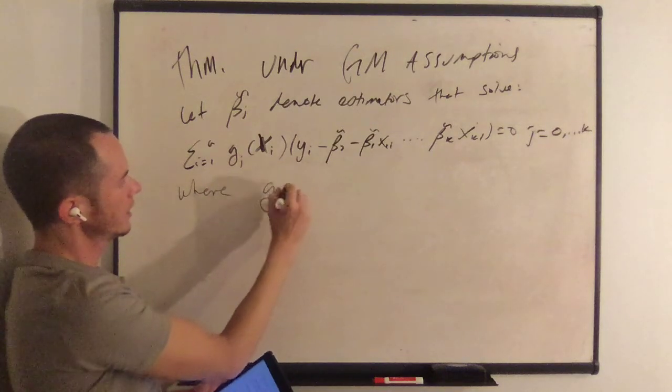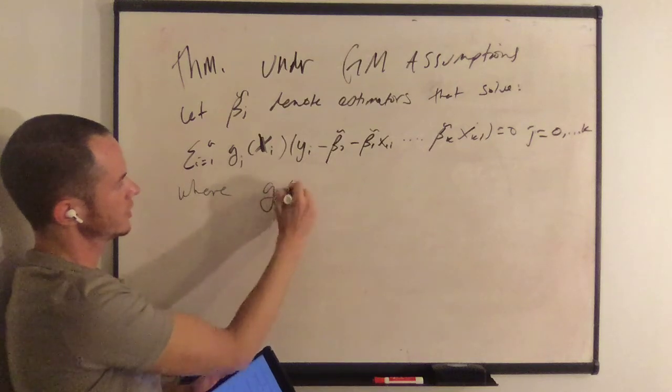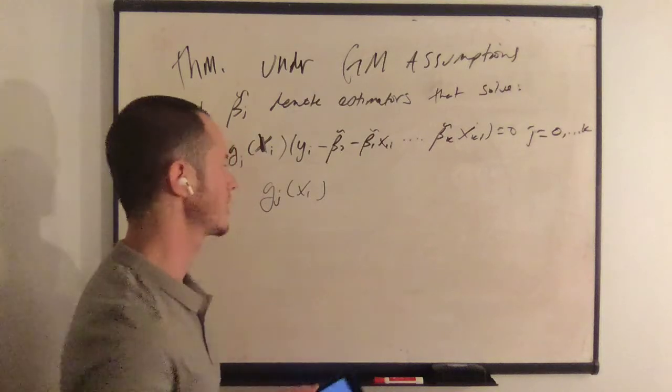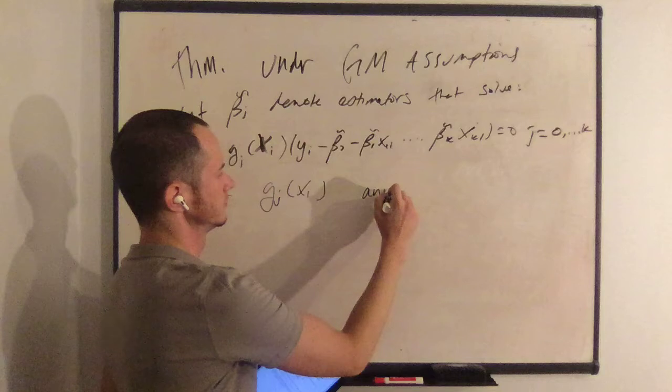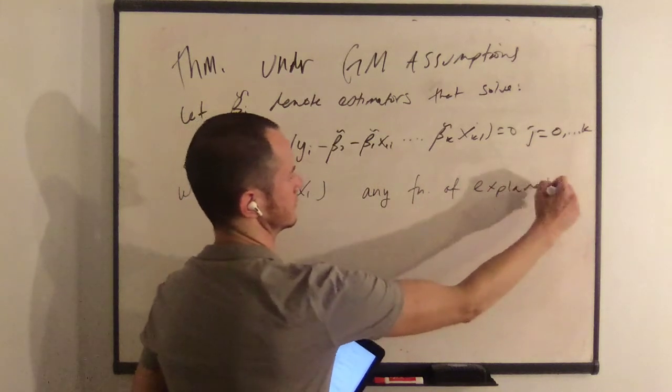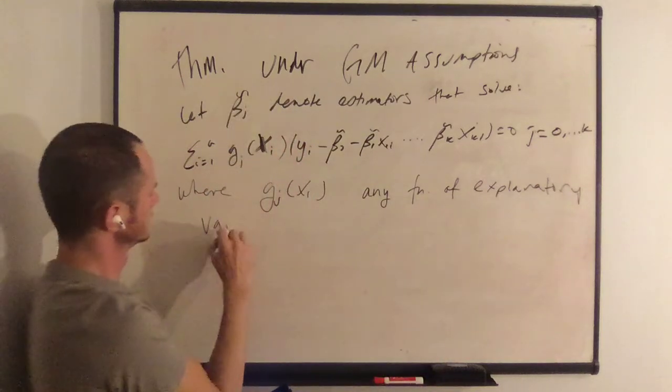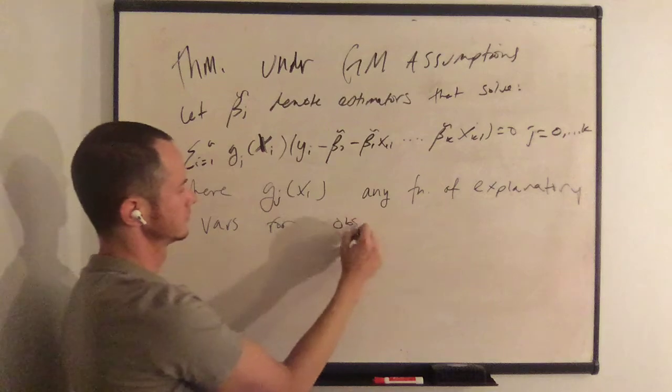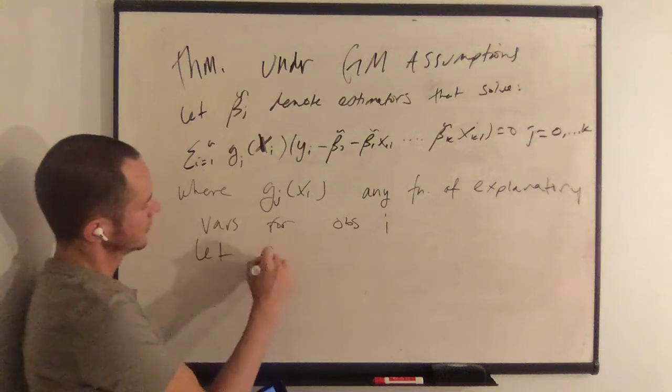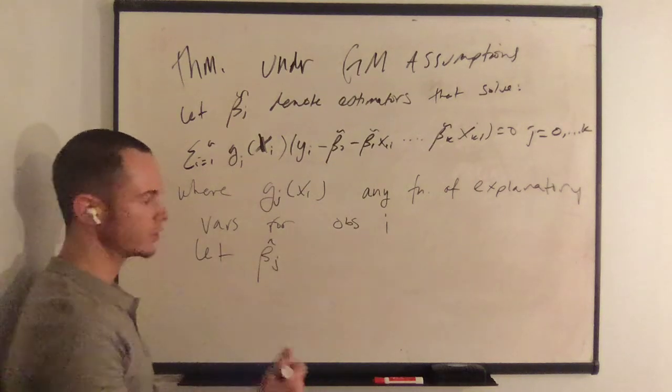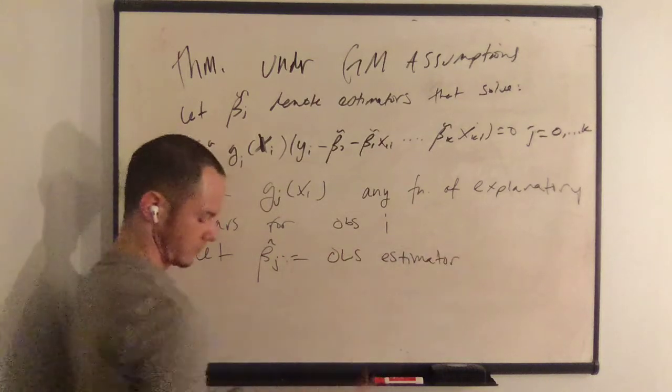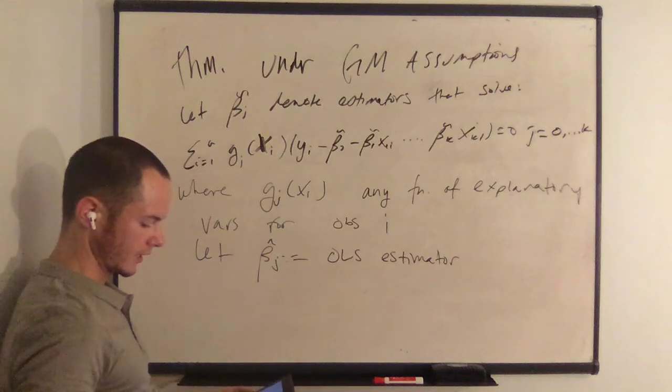Where G of j xi is any function of the explanatory variables for observation i. And we can let beta j hat as usual denote the OLS estimator.